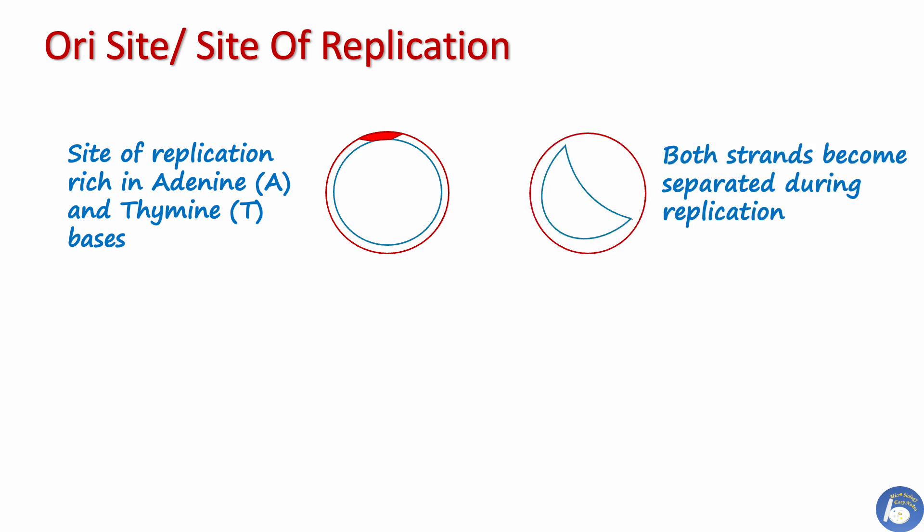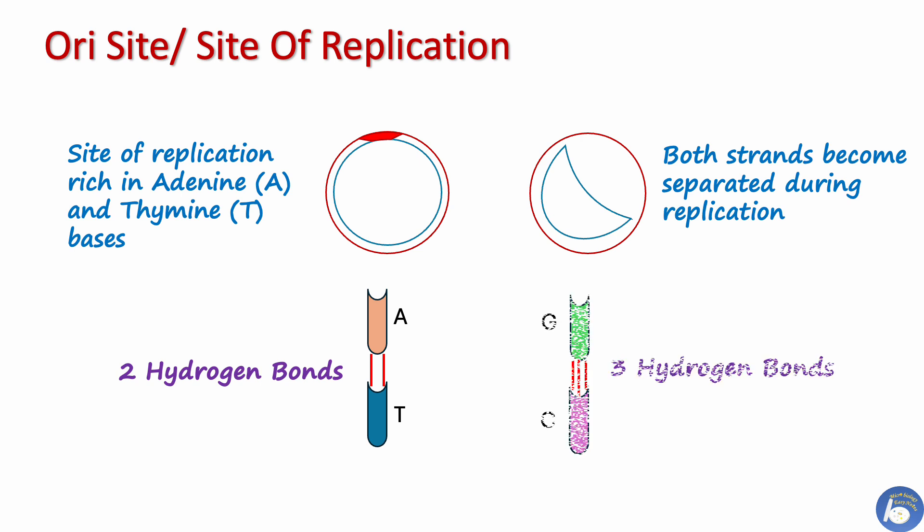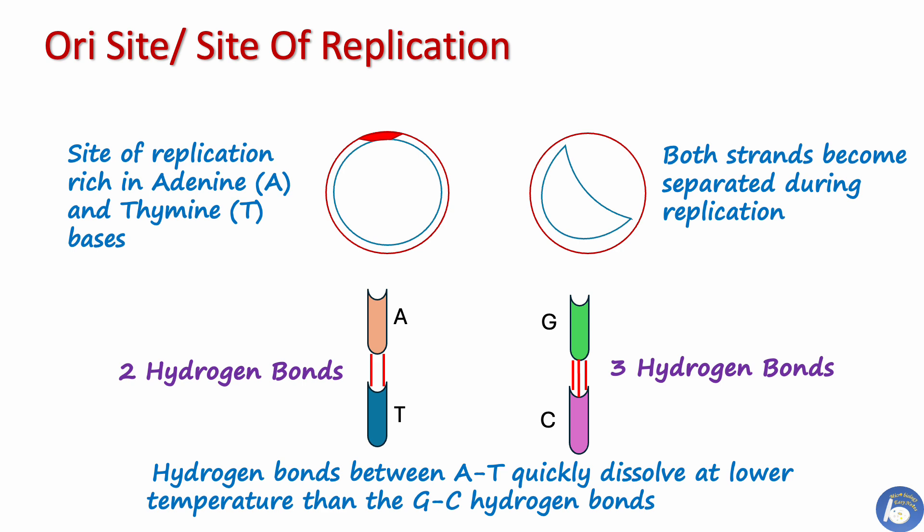Adenine and thymine base pairs are held together with two hydrogen bonds, while guanine and cytosine base pairs are held together with three hydrogen bonds. Due to this arrangement, stretches of DNA that are rich in adenine and thymine base pairs can be separated more quickly at lower temperatures.